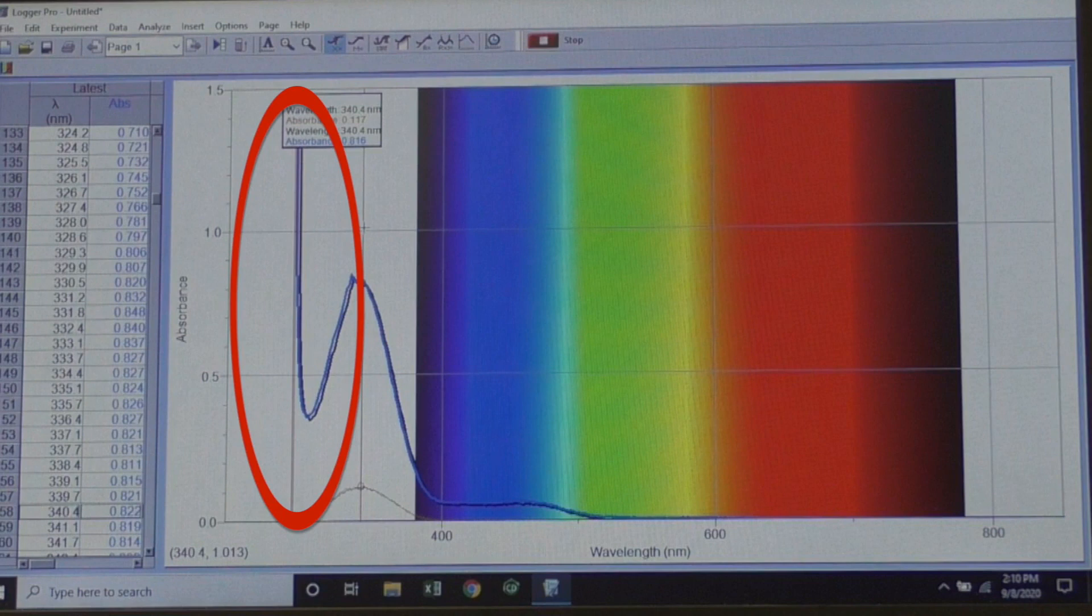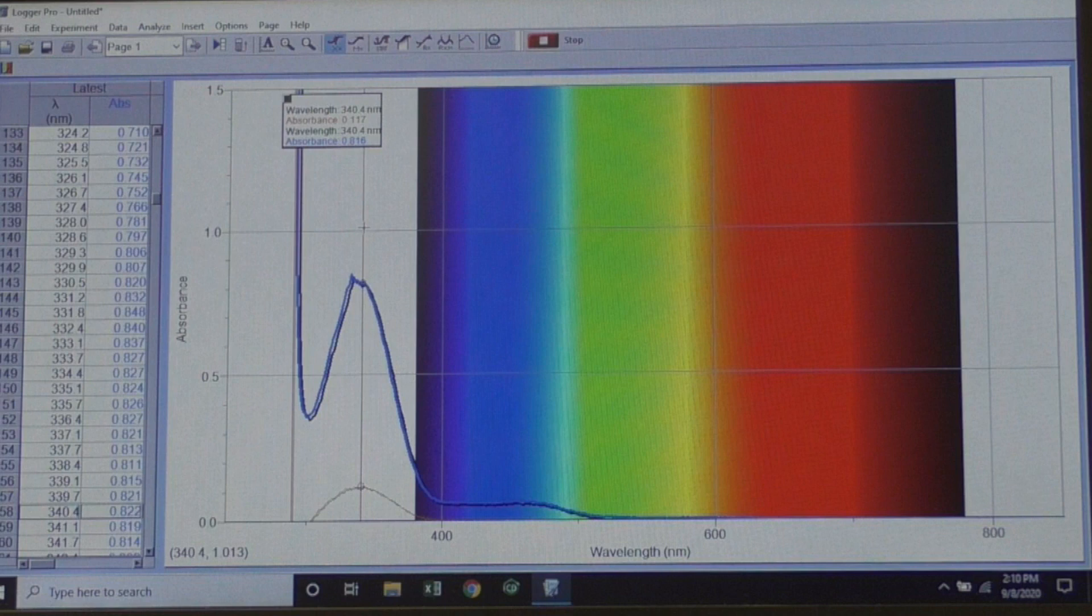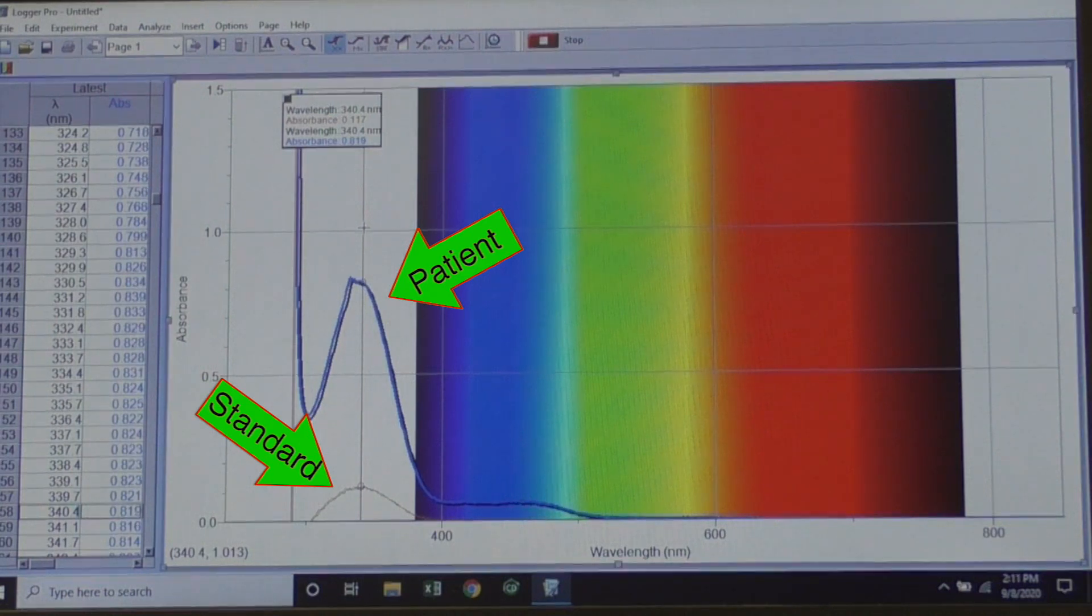Since it doesn't interfere with your readings at 340, it's not a problem. You can visually see here that the patient's level is very high compared to the standard. Your calculations should confirm this.